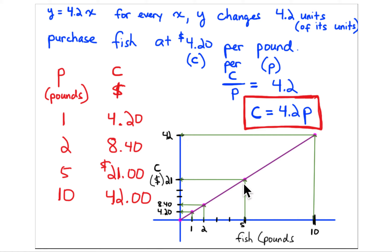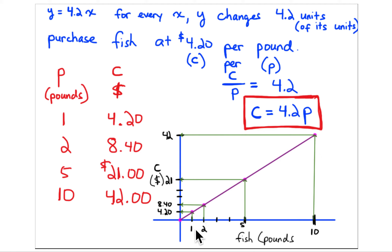Now place the points on the graph. Go out to five pounds and up to where that intersects with the cost — place a point there. Do the same for ten pounds and $42. The line goes through (0, 0) and through all of these points. For ten pounds you spend $42, so that also falls on the line. Use these points to draw the line.